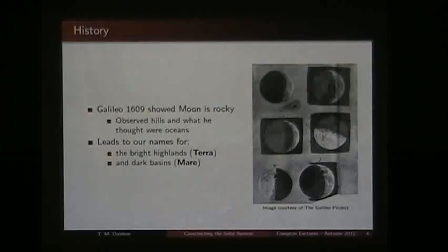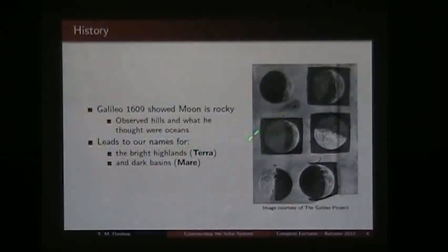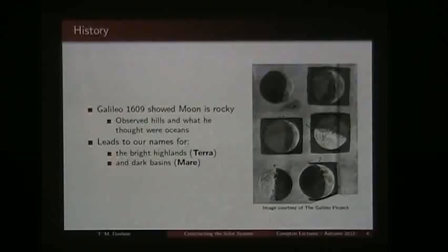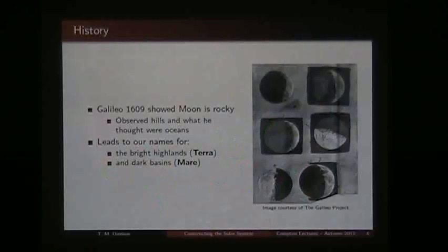A bit of history of our observations of the moon. Back in 1609, Galileo, using the best telescope that had been developed at the time, started looking at the moon. He came to the conclusion that the moon was a rocky body orbiting our planet. He saw what he thought were hills and oceans on the surface — these are some of his sketches from those observations. The speculation at the time was that there were probably humans living there.